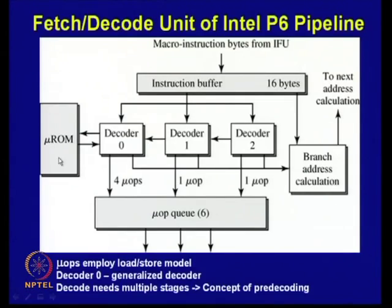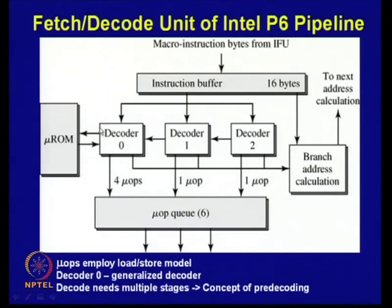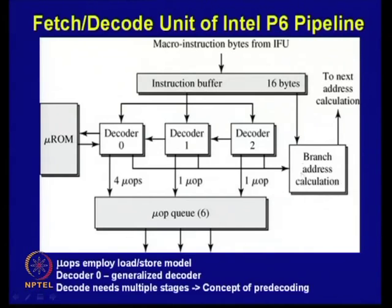The control unit can be of two types: hardware control unit and microprogrammed control unit. When using a microprogrammed control unit, micro-operations are stored in a separate memory called microprogram memory. That is where they are stored, and those operations are fetched from there and decoded. The micro-operation queue stores the 6 micro-operations, and branch address calculation takes place for generating the next instruction.